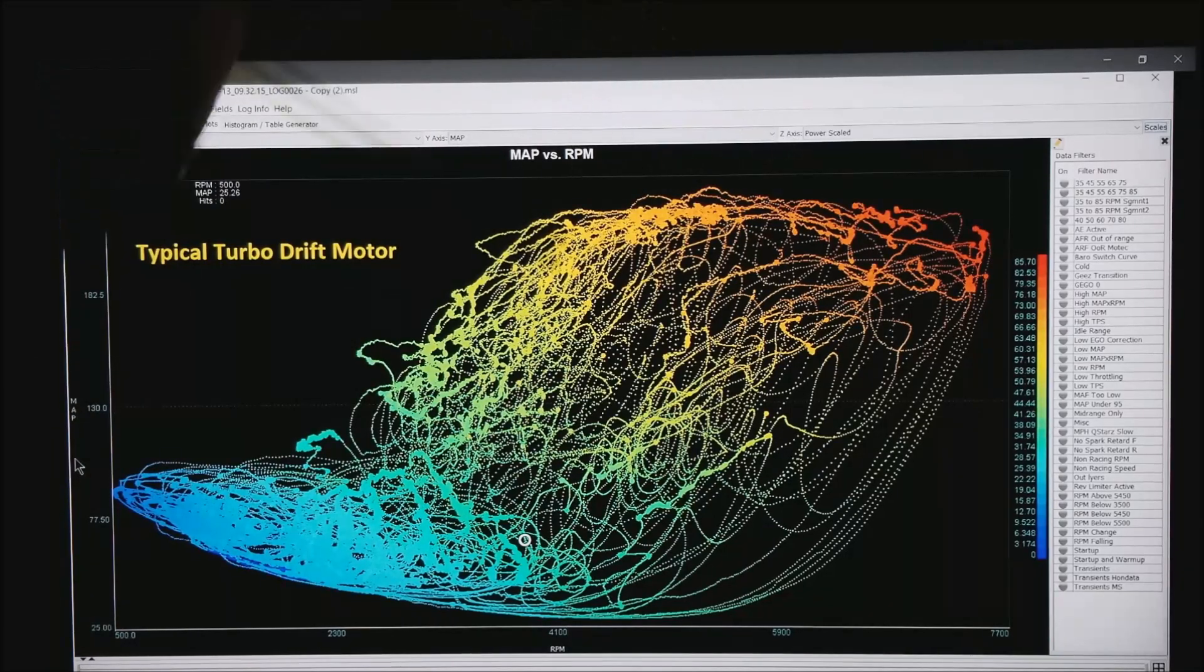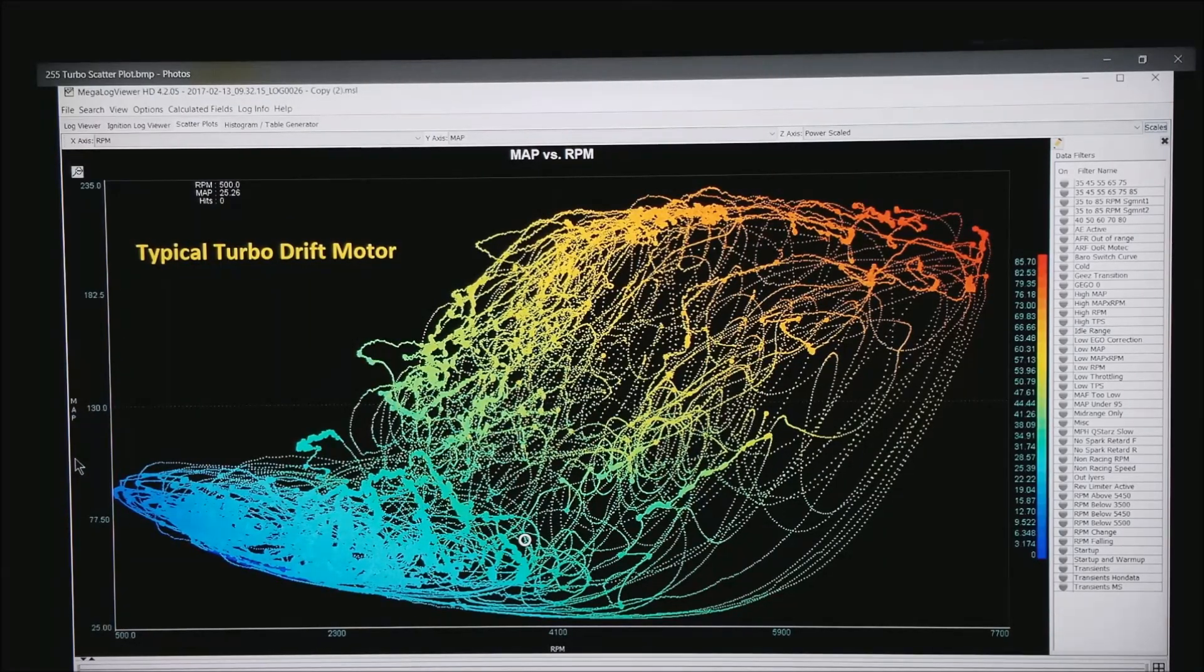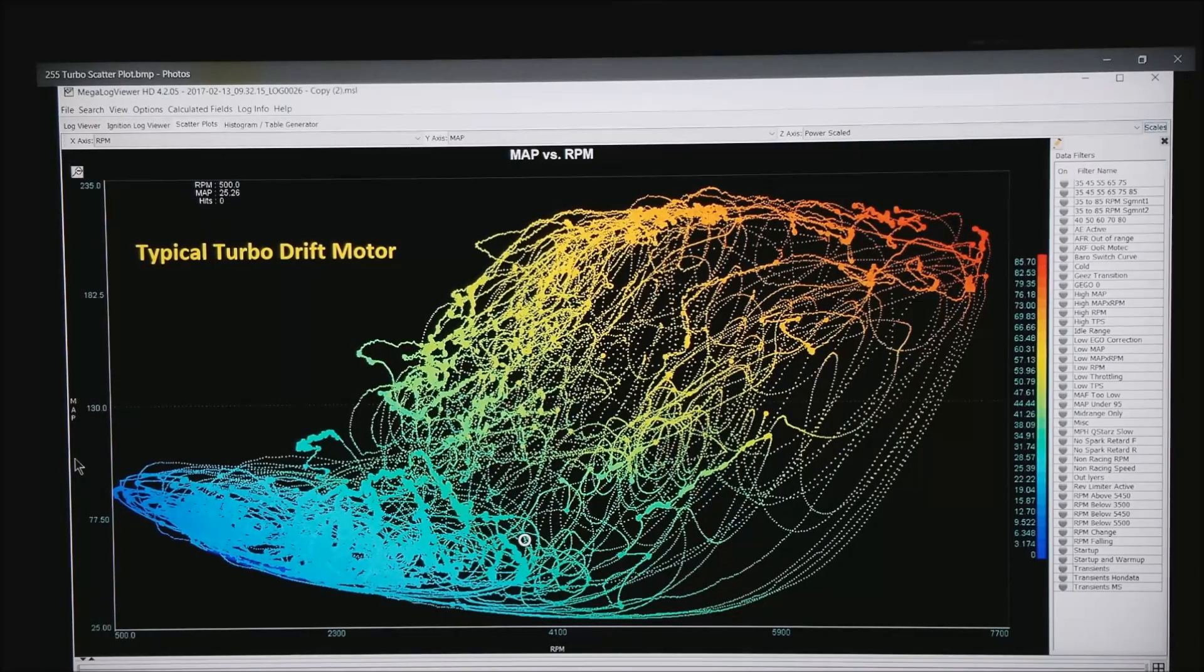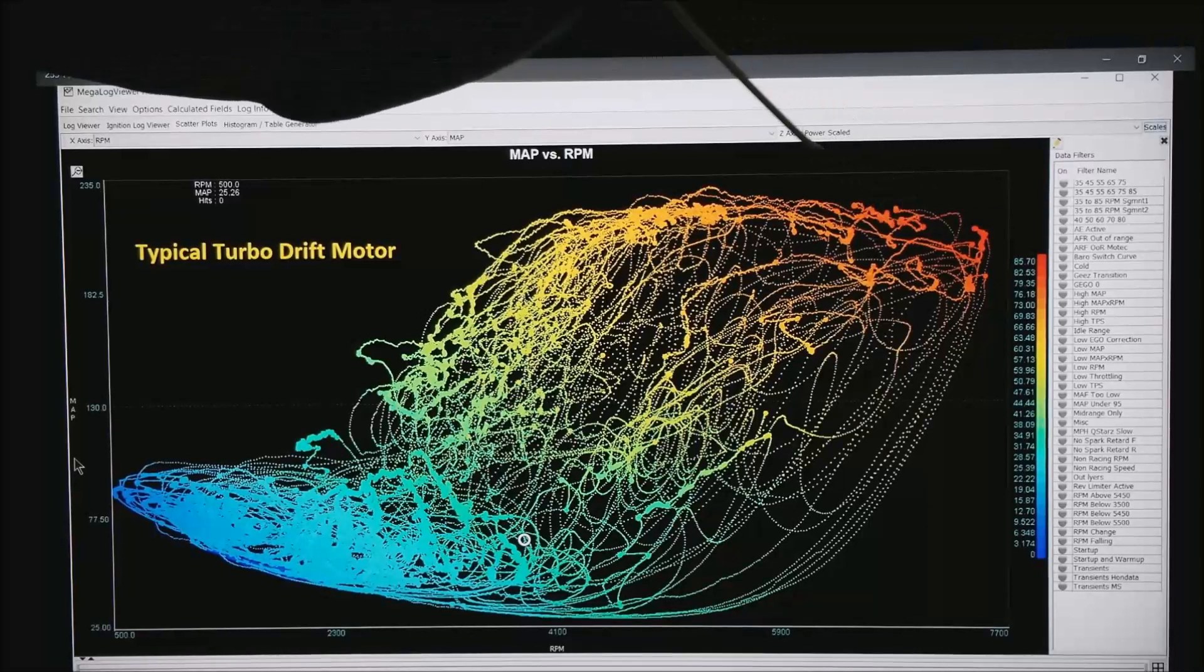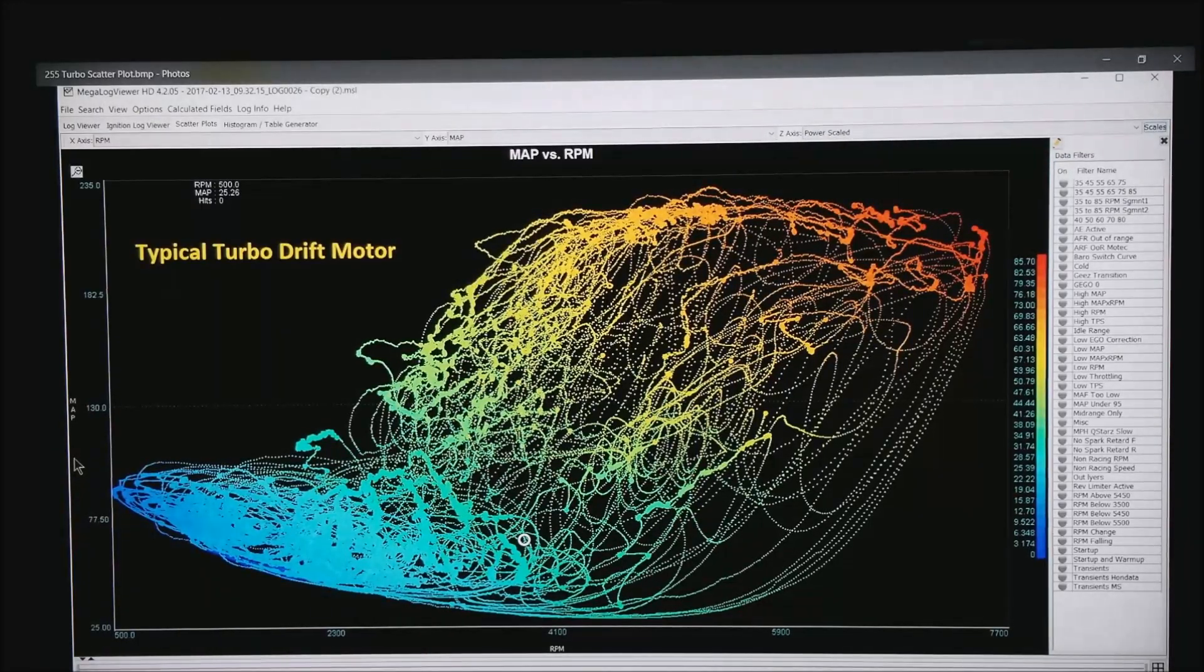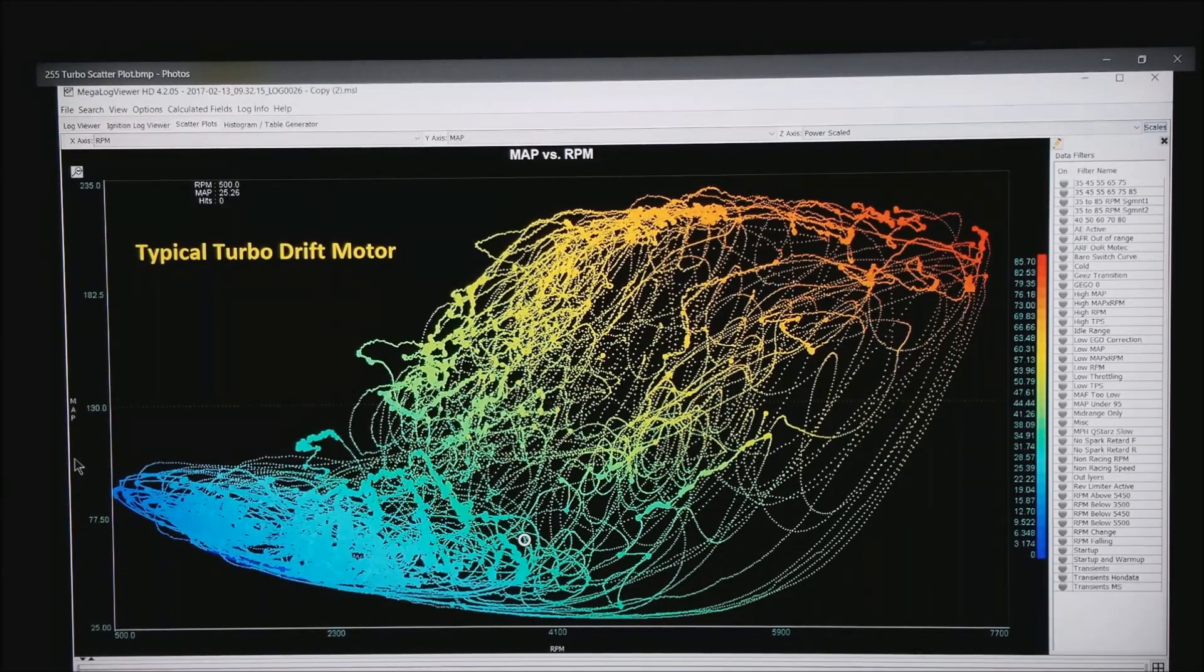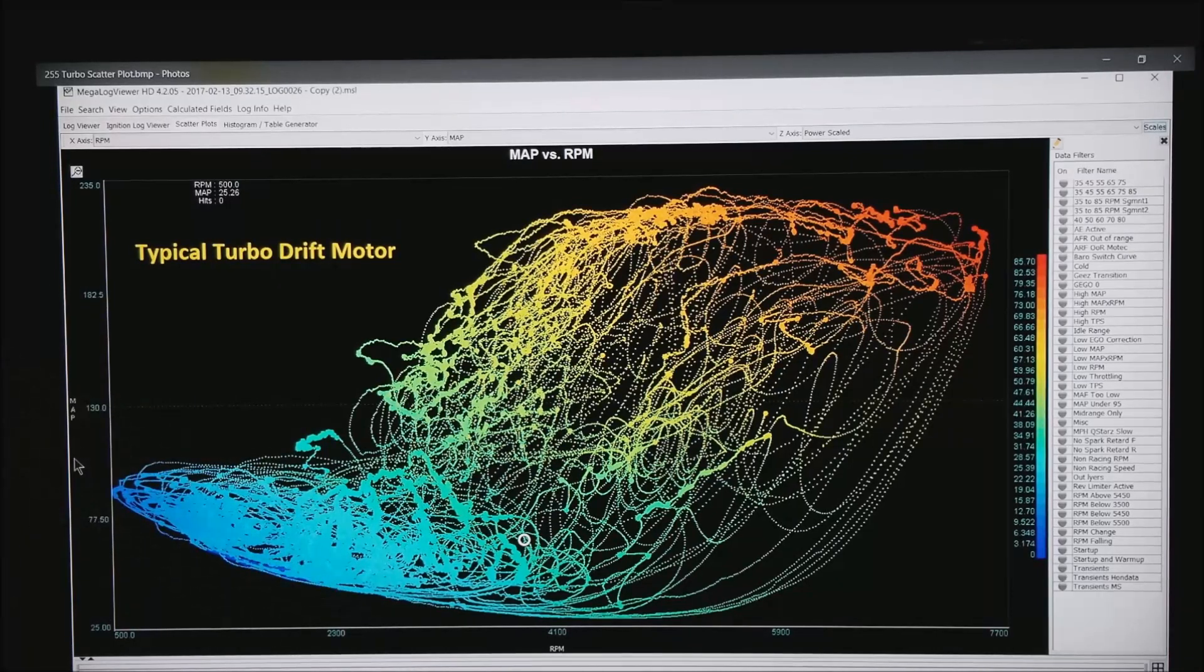Along the top is the boost control and again in the lower right is the downshift area where he's completely out of the throttle. I happen to have the color as power scaled. Don't worry too much about the units on this. What it is showing though is anywhere that's red or orange is the high power area of the motor or high horsepower. And in the lower left, the blue is where he's completely out of the throttle.